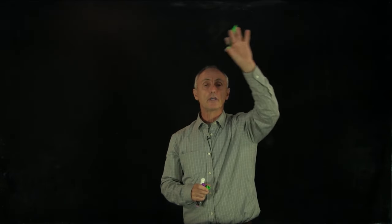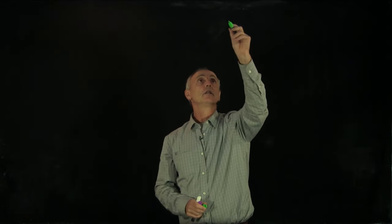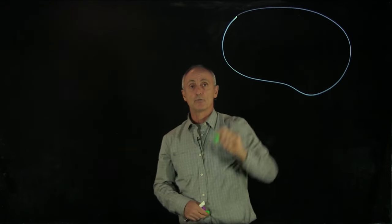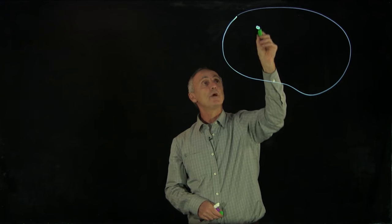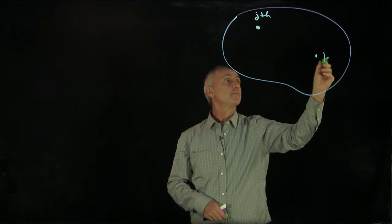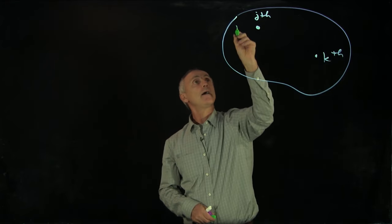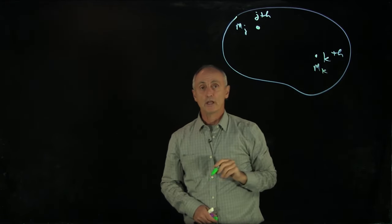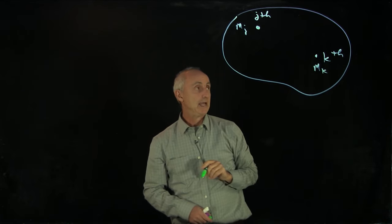So let's just draw, even though we looked at a rod here, let's just draw some extended idealized rigid body. And let's identify two points in that rigid body, the j-th point and the k-th point. Think of our rigid body as a bunch of point-like particles, mj and mk.